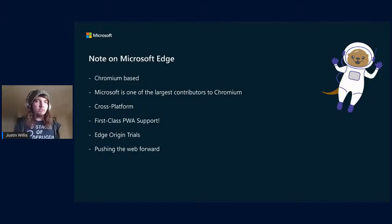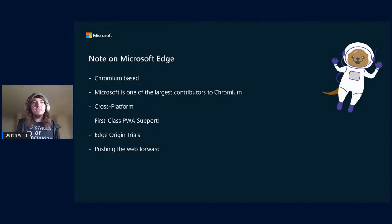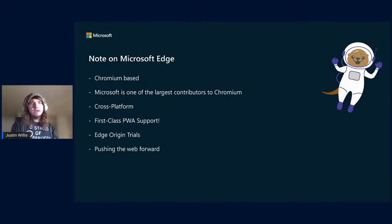Before I jump into PWA Builder and all the cool things we're working on, I wanted to give a note on Microsoft Edge. If you didn't know, Microsoft Edge is Chromium-based now — the same Chromium engine that powers Google Chrome, Samsung Internet, etc. Microsoft is actually one of the largest contributors to Chromium right now. It's also cross-platform, so Edge runs not just on Windows anymore — you can install it on Linux, macOS, Android, and even iOS.